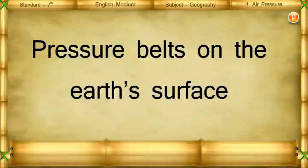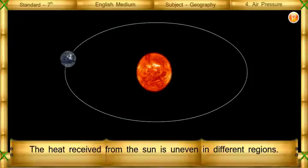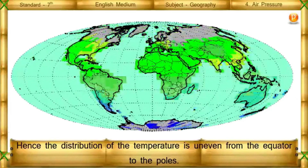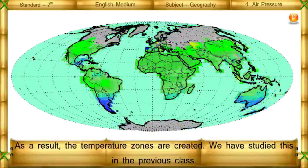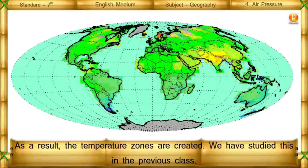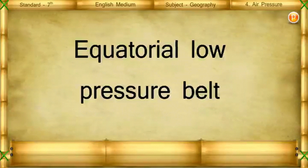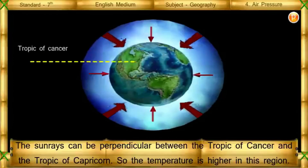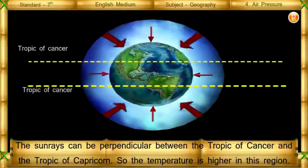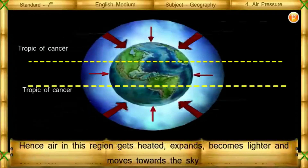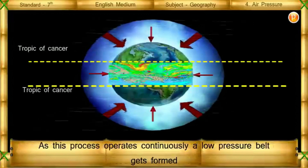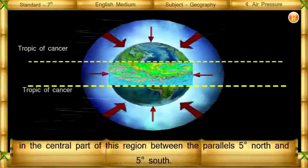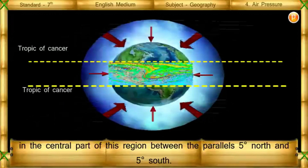Pressure belts on the Earth's surface: The heat received from the Sun is uneven in different regions; hence, the distribution of temperature is uneven from the equator to the poles, resulting in temperature zones. Equatorial low pressure belt: The sun's rays can be perpendicular between the Tropic of Cancer and the Tropic of Capricorn, so the temperature is higher in this region. Hence, air gets heated, expands, becomes lighter, and moves towards the sky. As this process operates continuously, a low pressure belt gets formed in the central part of this region between the parallels 5 degrees north and 5 degrees south.